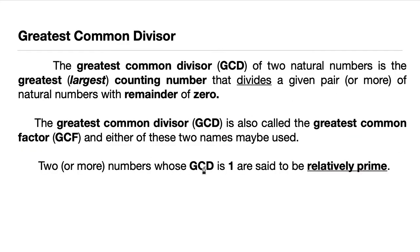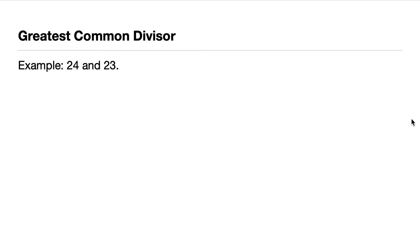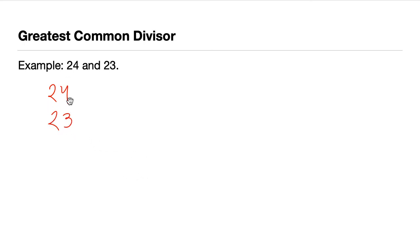Two or more numbers whose GCD is one are said to be relatively prime to each other. For example, let's find the GCD of 24 and 23. What we need to do first is to prime factorize both of them.